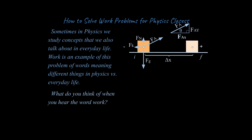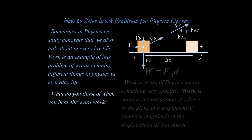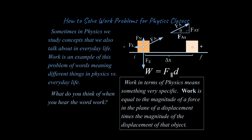That is not what we mean in the physics sense of the word work. So what do we mean with the physics sense of the word work? We mean something very specific. We mean that work is equal to the magnitude of a force in the plane of a displacement — force parallel to the motion — times that displacement, that delta x. So in this scenario, the component of the force that is parallel to the motion would be the F_ax value. So we could solve for the work that the force applied does in the x-axis.